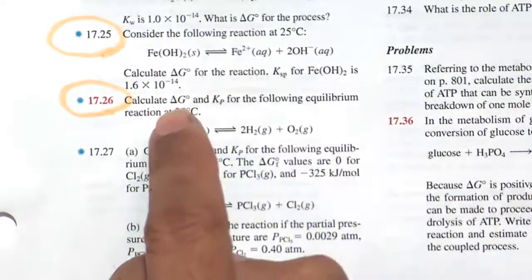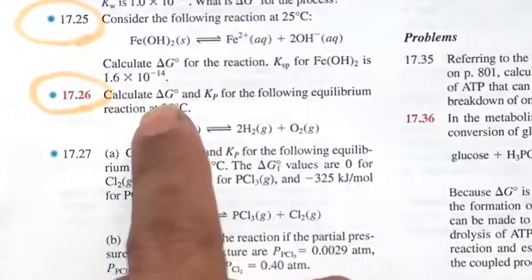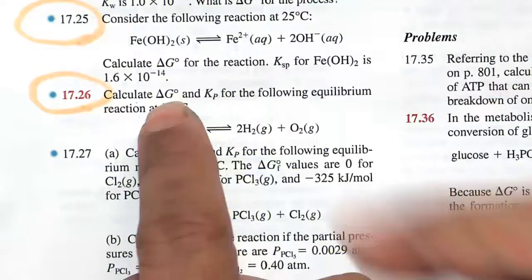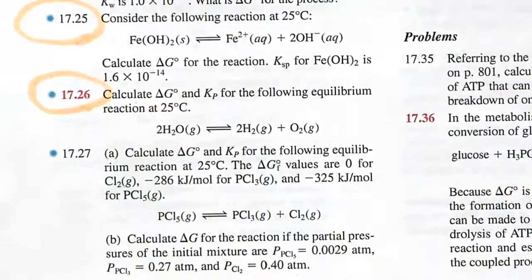If you don't see delta G naught and just simply see delta G, then you cannot use the back-of-the-book values. But that naught symbol, that superscript O, tells us at standard state we can use the back-of-the-book values.